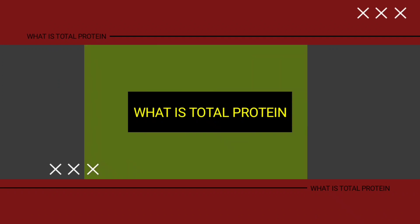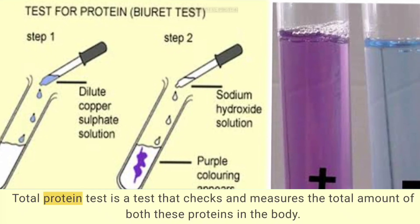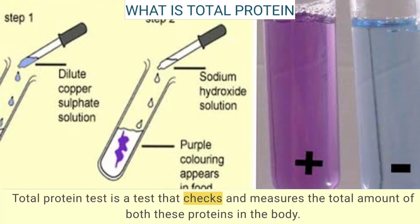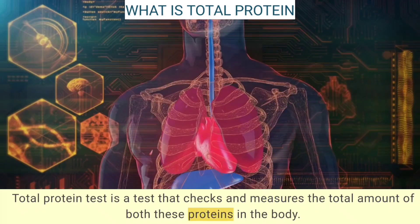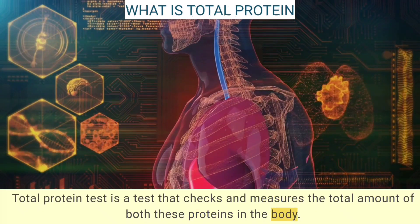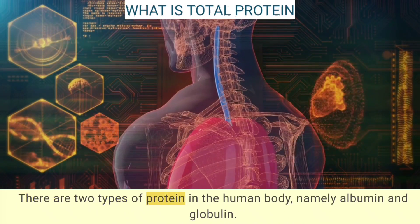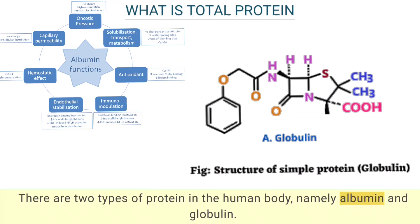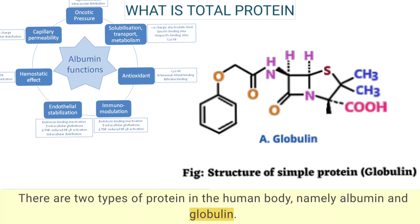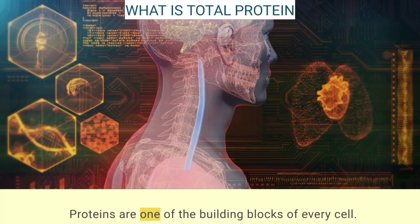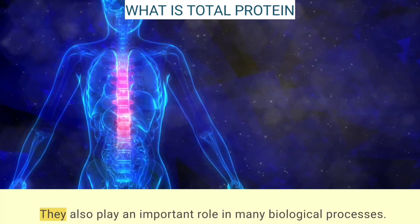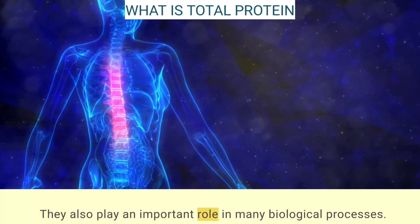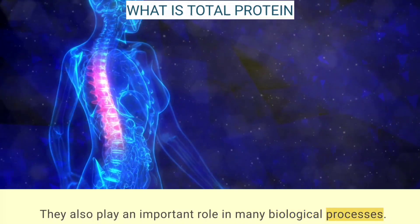A total protein test is a test that checks and measures the total amount of proteins in the body. There are two types of protein in the human body: albumin and globulin. Proteins are one of the building blocks of every cell and play an important role in many biological processes.